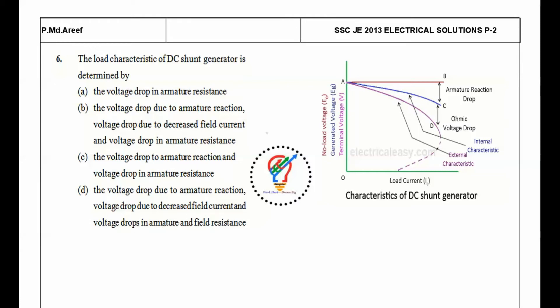As you can see here, the characteristics of DC shunt generator. This is the no-load characteristic voltage here. The armature reaction drop and armature resistance drops are shown. These are the armature reaction drop, and next is the armature resistance drop or ohmic drop.